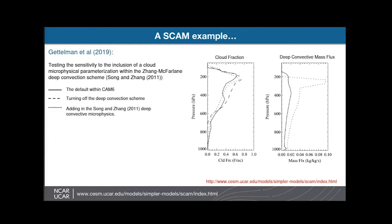SCAM is documented in a paper by Andrew Gettelman, in the CAM user's guide, and on the simpler models website. As an example of its use — and this is not my area of expertise — Andrew Gettelman looked at the sensitivity to different degrees of complexity within the Zhang-McFarlane deep convection scheme. The solid line shows default CAM6, the dashed shows what happens if you turn off the deep convection scheme, and the dotted shows what you get if you add a microphysical scheme within the deep convection scheme.